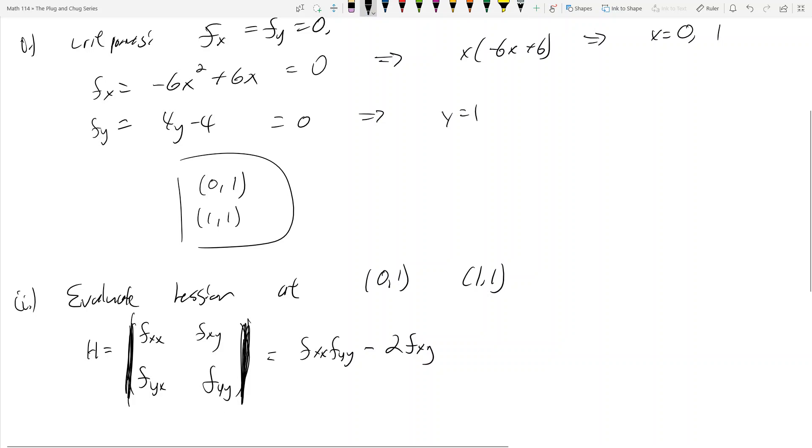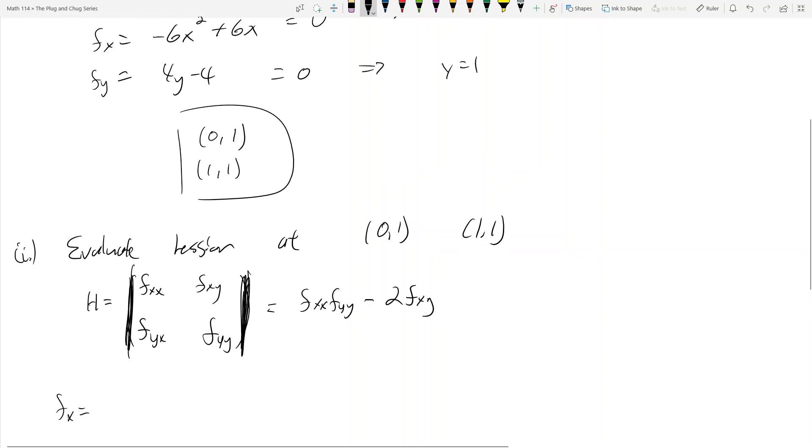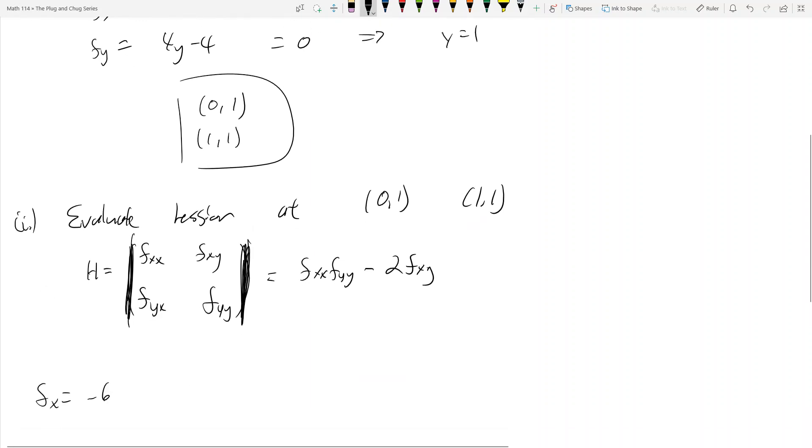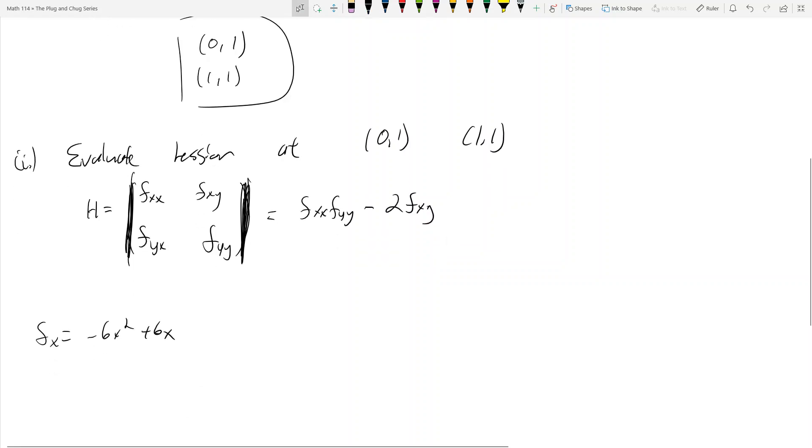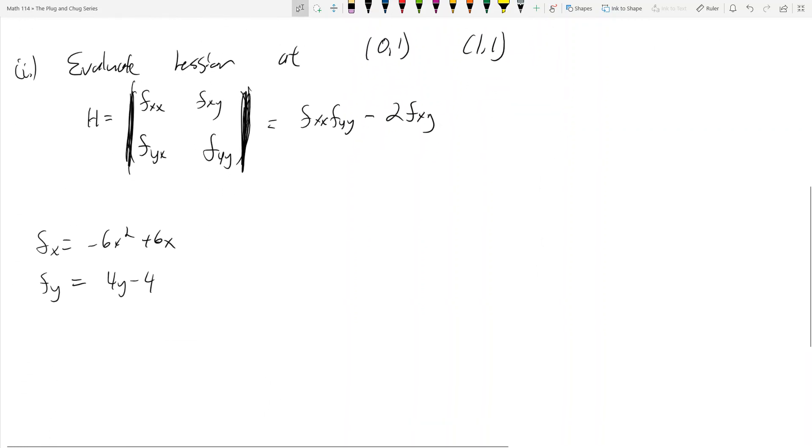And I want to find what that's going to be at the point 0, 1. We need to first find all these derivatives. So we have f of x and f of y, which we wrote above. f of x was equal to negative 6x squared plus 6x, and f of y was equal to 4y minus 4.